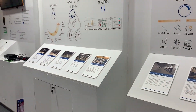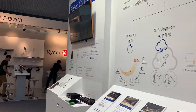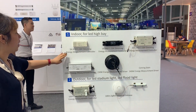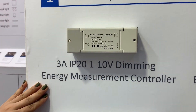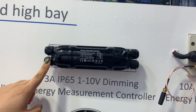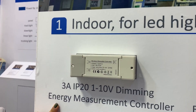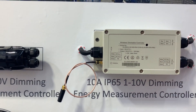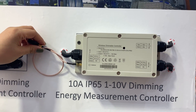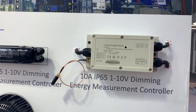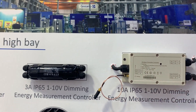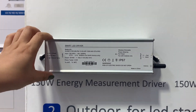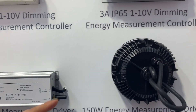These are the two application solutions we offer. Looking at the full range for industrial lighting control: there is an IP20 controller at 3A and an IP65 version. The IP65 can be placed outside the high bay fixture, while the IP20 needs to be installed inside the driver box. For high-power high bay applications, we recommend the 10-ampere IP65 dimming controller. All three support energy measurement, and we are currently developing a 150-watt driver, available in rectangular or round form.